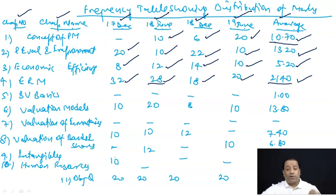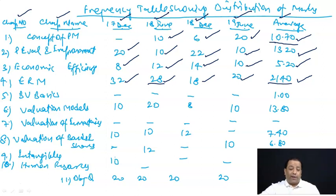Approximately, जो first part है — Strategic Performance Management — अगर हम बात करें, तो approximately 40% marks out of 50, four chapters cover करता है। Strategic performance management का यह overview है।